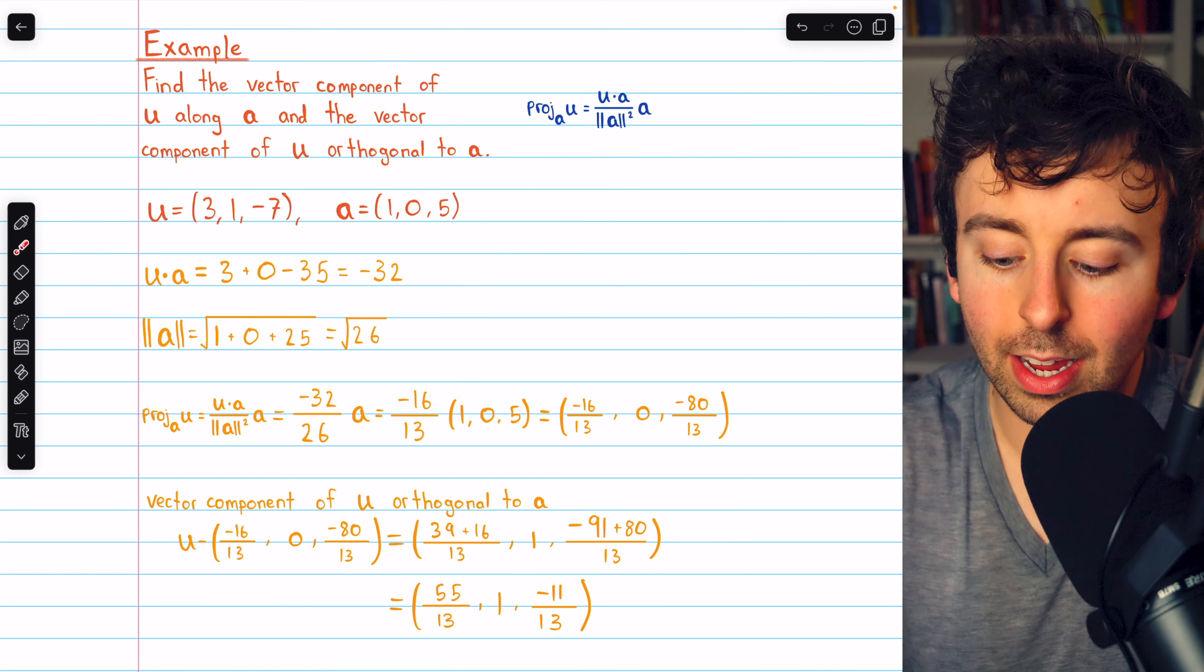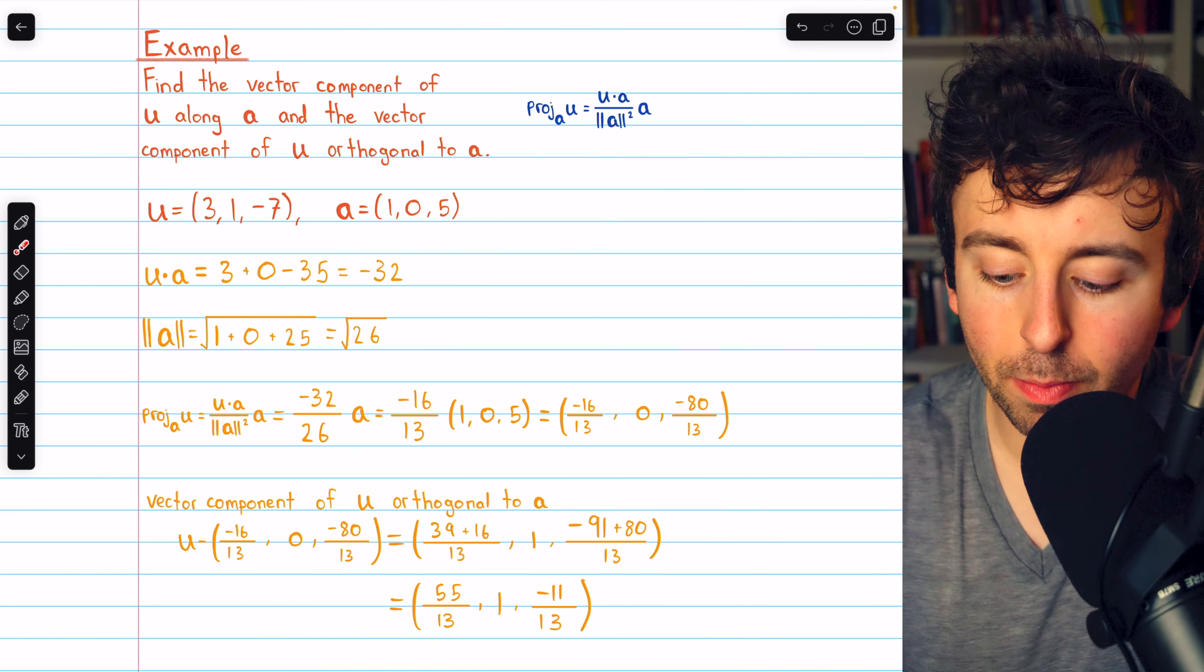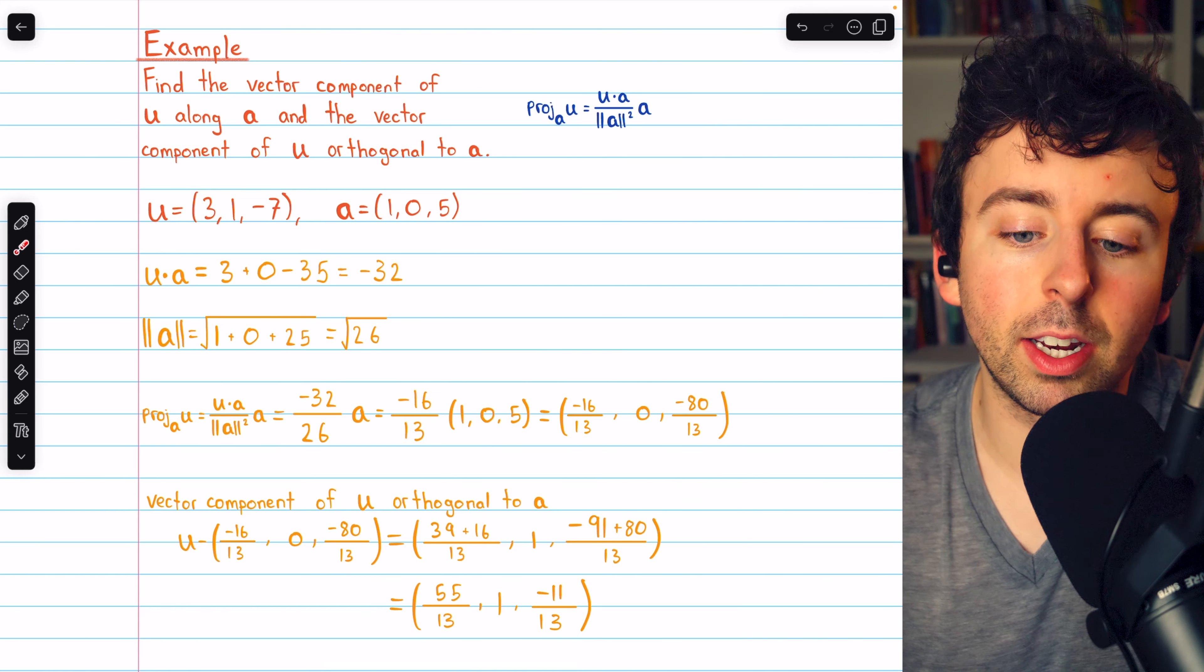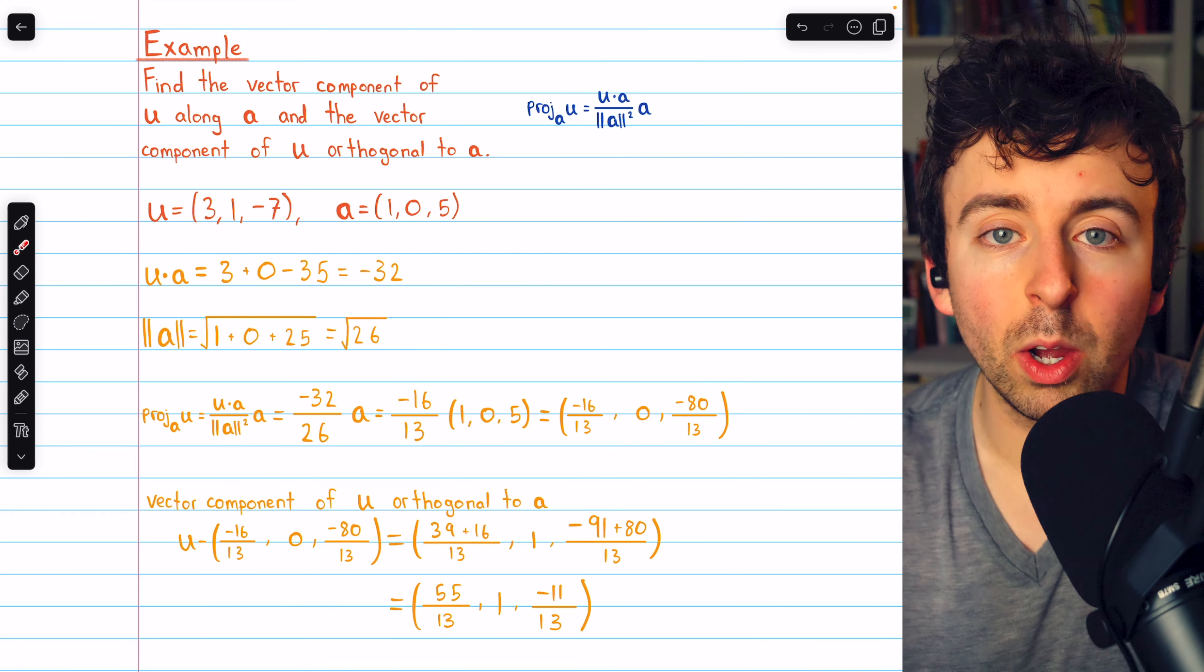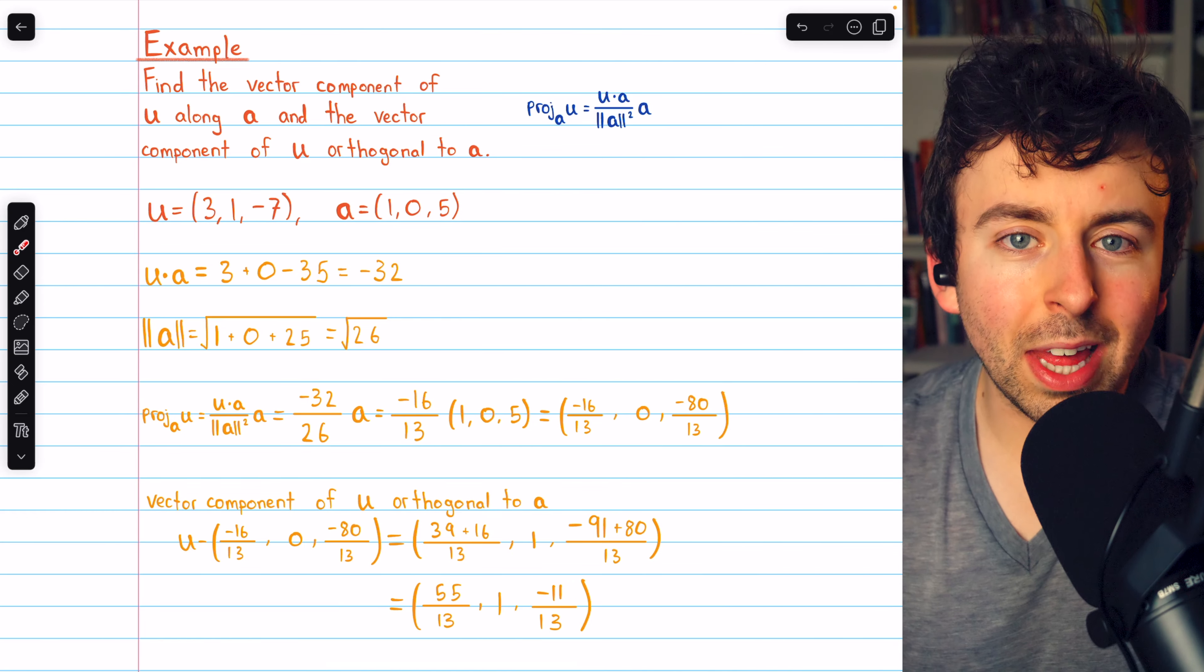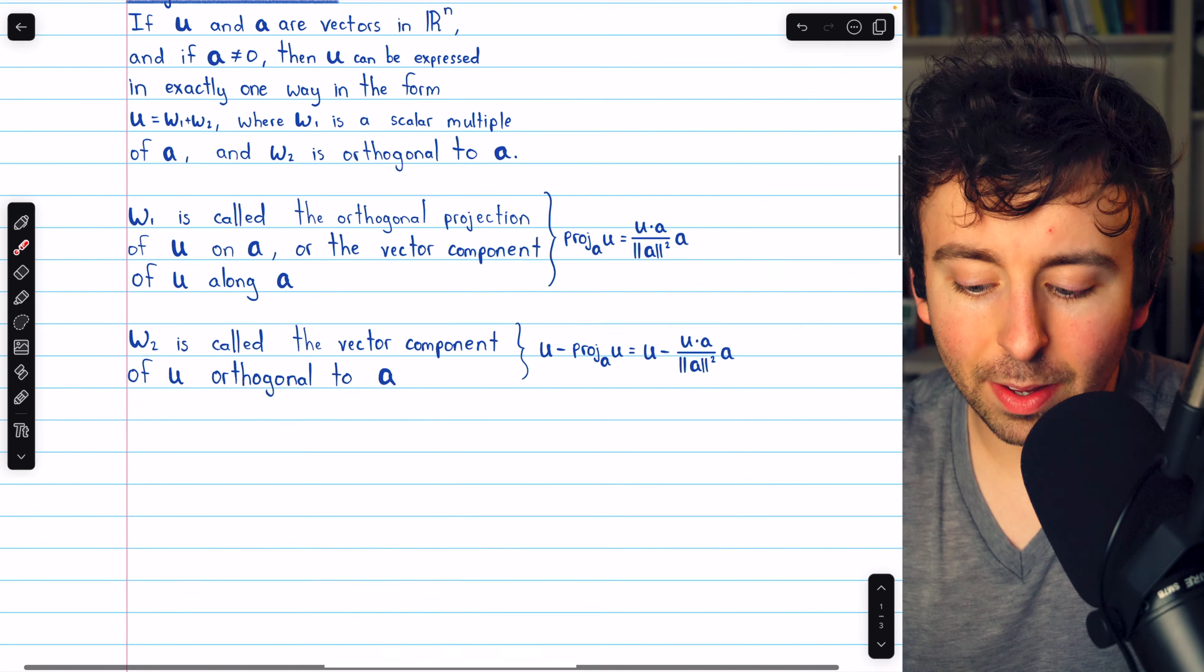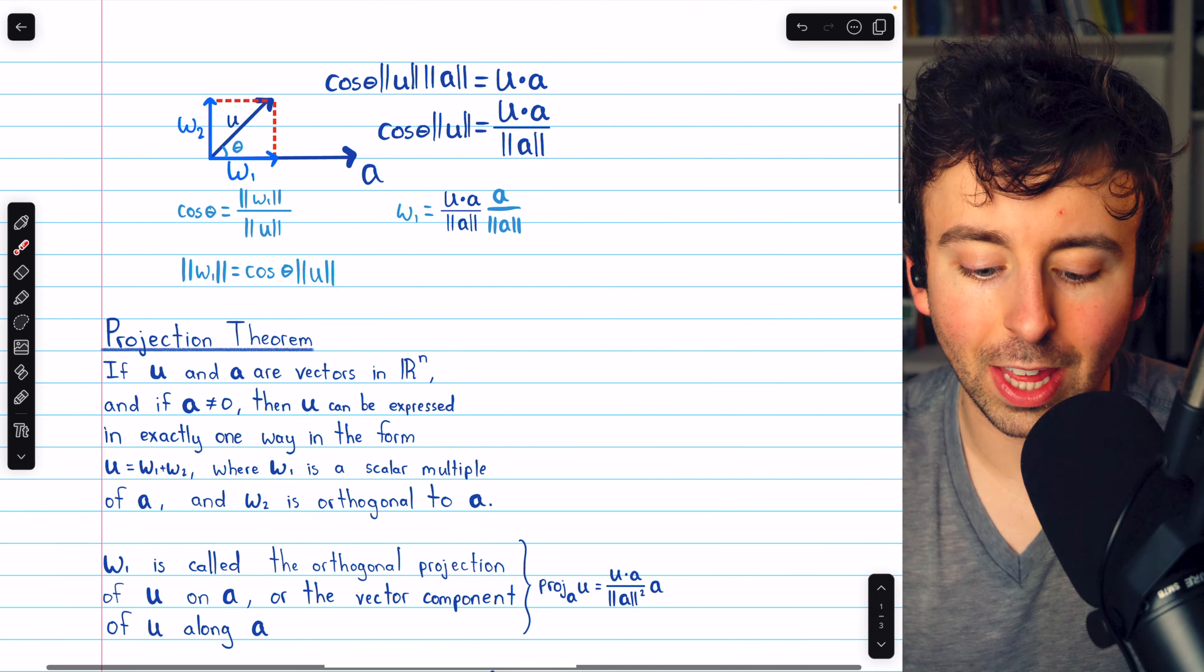If we add this and this, we will get u. 55 over 13 plus negative 16 over 13, for example, is 39 over 13, which is 3, the first component of u. We've decomposed u into a vector parallel to a and a vector orthogonal to a. So that's what the orthogonal projection of a vector is, and that's how to find it and where that calculation comes from, at least in the two-dimensional case.